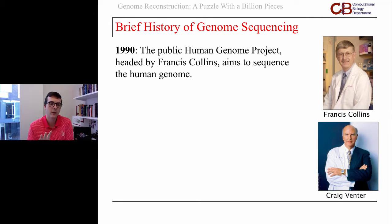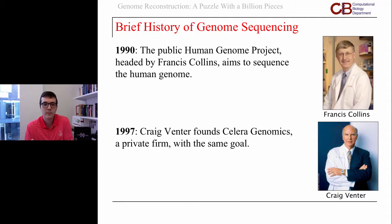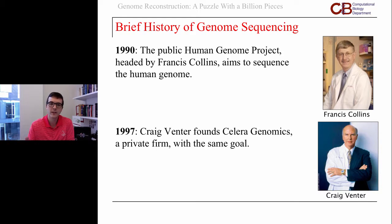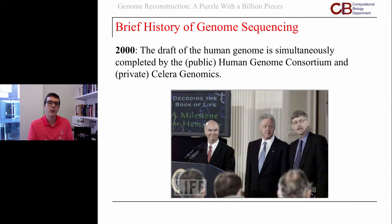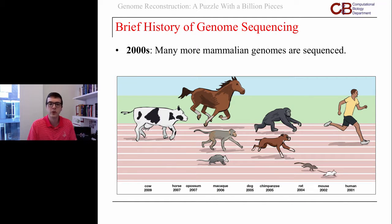Seven years later, Craig Venter jumped in and said he thought the government project was going a bit too slow. He brought in private investment with the same goal: to race the Human Genome Project to sequencing it. This led to a partnership between the Human Genome Project and Celera Genomics, and by 2000 they were able to go to the White House and make the big announcement that they had decoded the book of life and completed a draft version of the human genome. This led to a huge boom in genome sequencing.